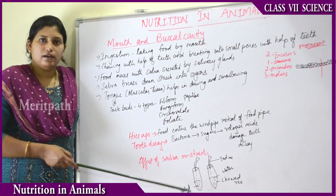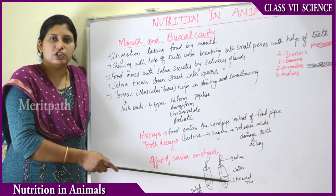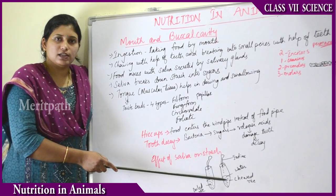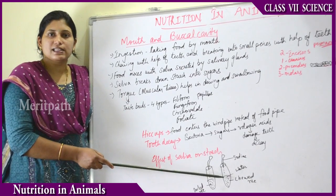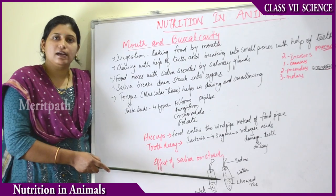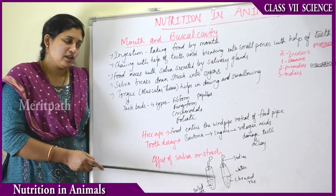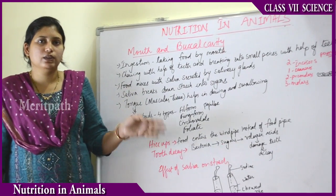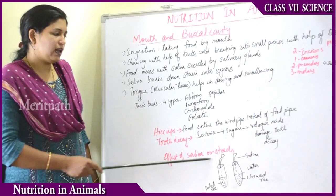Which test tube changes color? The test tube in which the boiled and chewed rice is present changes color. Because of the presence of an enzyme secreted by the salivary gland known as salivary amylase, saliva breaks down the starch into sugars. That is the effect of saliva on the starch.